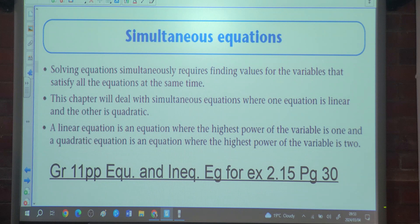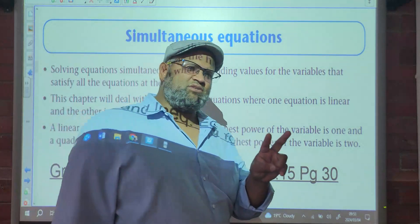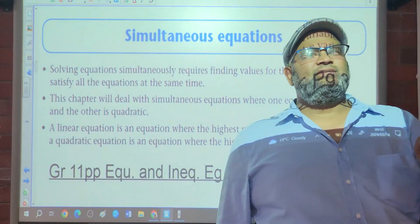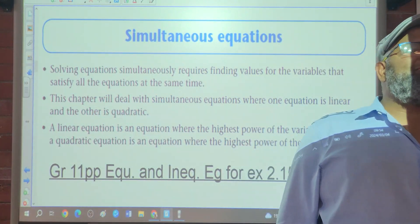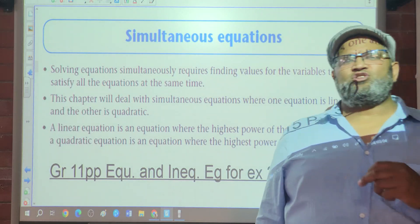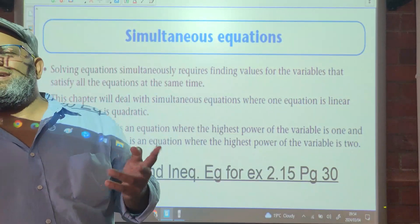Normally we've done this before — we have two equations and we work out the point of contact. There are two ways of solving simultaneous equations: elimination and substitution. The nature of these equations is that one is normally quadratic and the other one is linear.